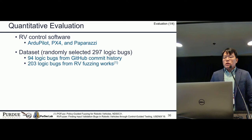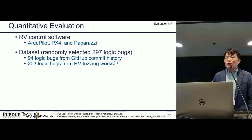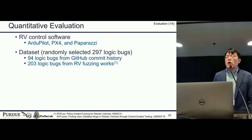To evaluate PGPatch, we deployed it on three popular RV control software platforms: ArduPilot, PX4, and Paparazzi. We randomly collected around 300 logic bugs from their GitHub repositories and from bugs reported in RV fuzzing papers. As a result, PGPatch succeeded in fixing around 86% of bugs.